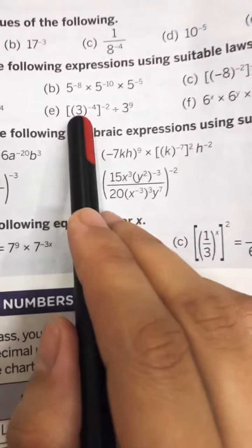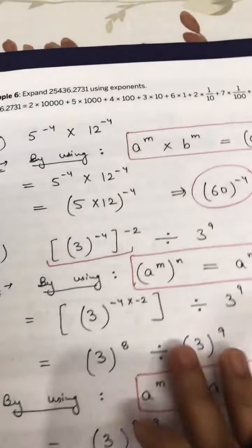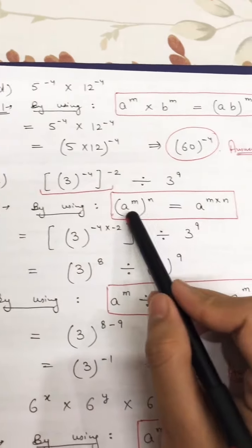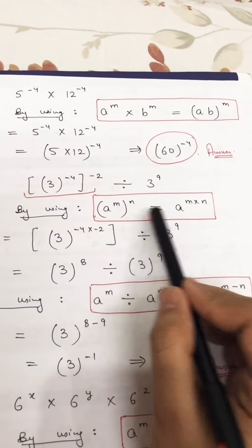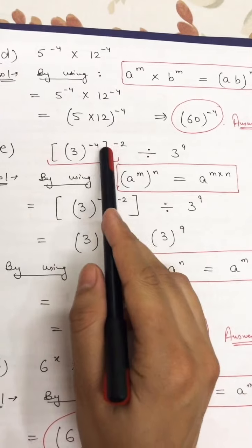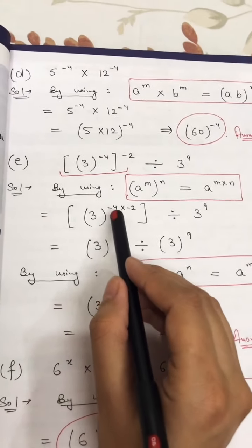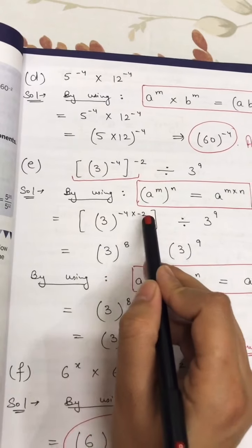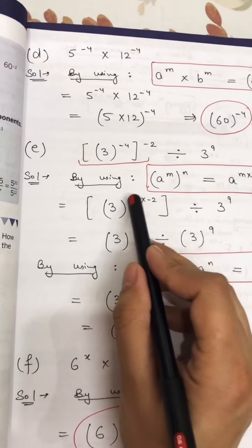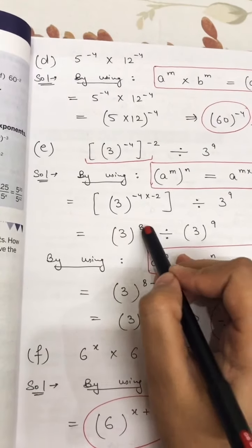Part E is 3 raised to power minus 4, raised to power minus 2, divided by 3 raised to power 9. We need two laws. First, solve the inner part using: a raised to power m raised to power n equals a raised to power m multiplied by n. So 3 raised to power minus 4 multiplied by minus 2: two minus signs give plus, so 4 times 2 is 8, giving 3 raised to power 8. Now we have 3 raised to power 8 divided by 3 raised to power 9.